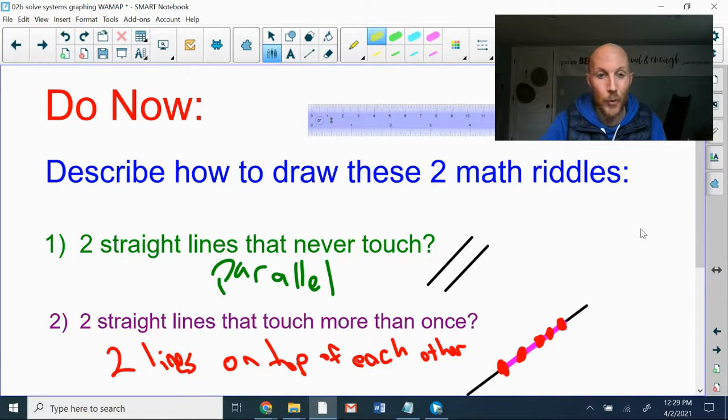Alright, so for number one, we can draw two parallel lines. Those are never going to touch. They just keep going forever in perfectly straight lines. Same direction, never touch.